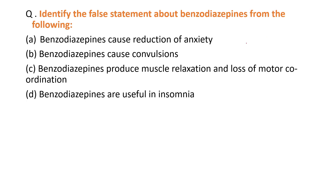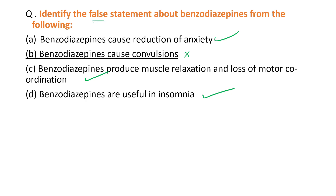The next MCQ: identify the false statement about benzodiazepines. Benzodiazepines are a class of sedative and hypnotic drugs used in the treatment of convulsions and insomnia. Options: benzodiazepine causes reduction of anxiety — true. Benzodiazepine causes convulsion — this is wrong, benzodiazepines decrease convulsions, never cause them. Benzodiazepine produces muscle relaxation and loss of motor coordination — true. Benzodiazepines are useful in insomnia — correct. So the false statement is that benzodiazepine causes convulsion.